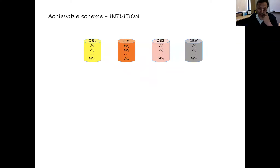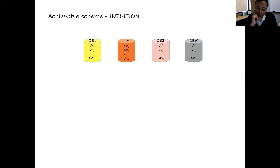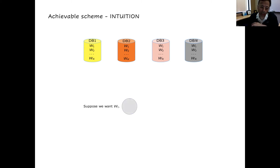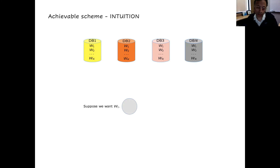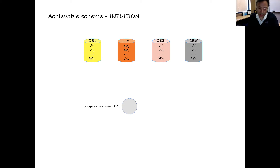The capacity of PIR when you have N databases each storing all K messages is given by a specific expression. This many bits of desired message can be retrieved per bit of download, and nothing more can be done. To understand this intuitively: with N=4 databases, the obvious thing is to divide the desired message circle into four parts and ask each database to send one quarter. But that's not private — to maintain privacy, you have to pretend you could have wanted any message, so you also ask for portions of the other messages.